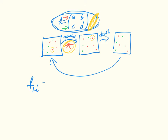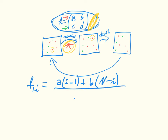N is our total number of individuals. An individual of the first type gets A when they meet an individual of the first type — so they get A, I minus one times, because there are I minus one other individuals of the first type. They get B, N minus I times, since N minus I of them are of the second type. We divide everything by N minus one as a normalization.